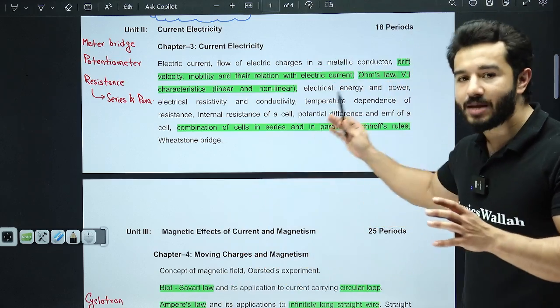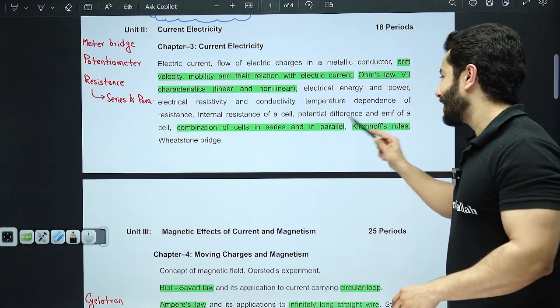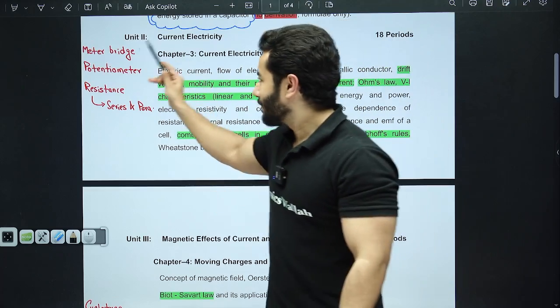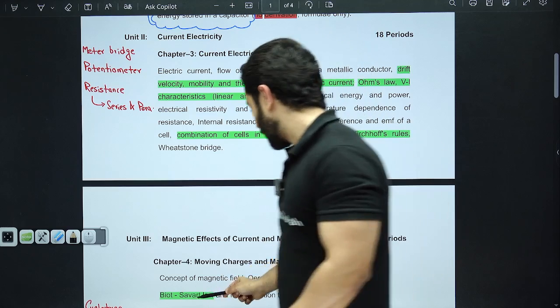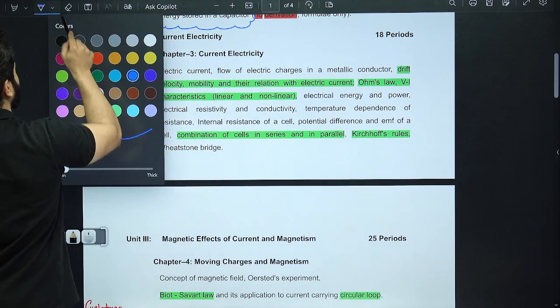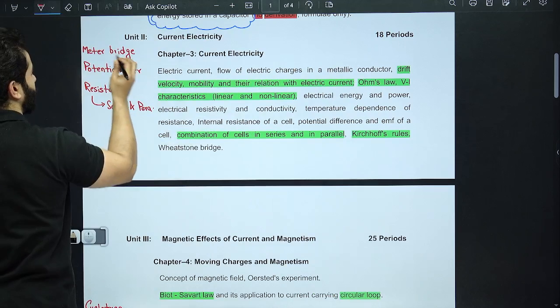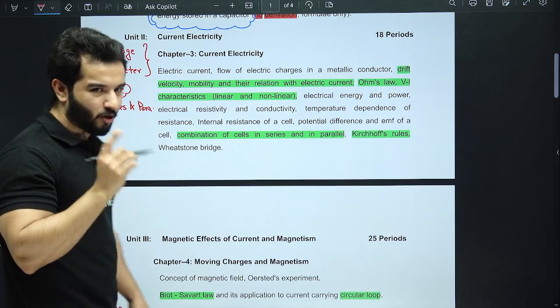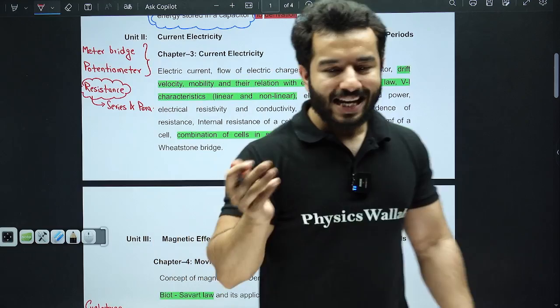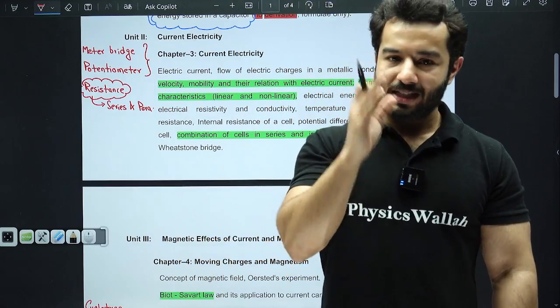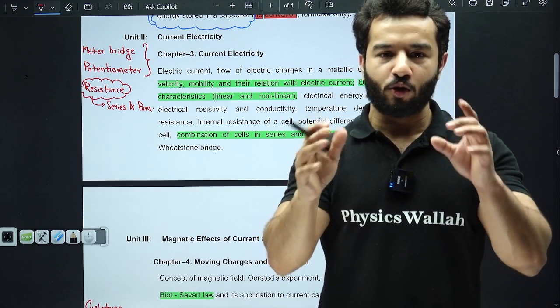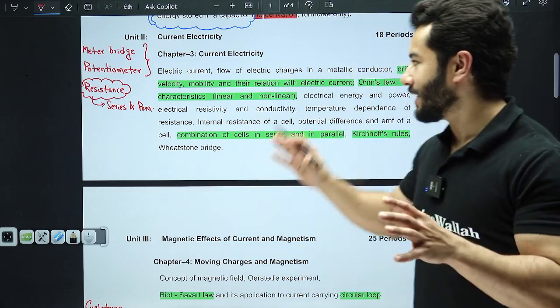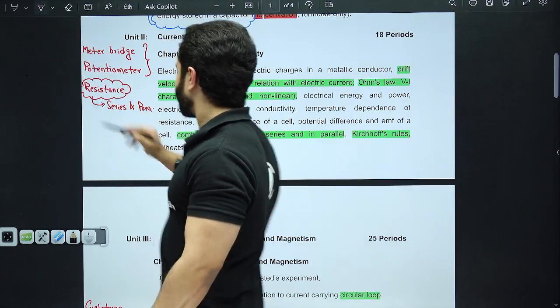I am just marking the very most important topics. Combination of cells in series and parallel is important. Kirchhoff's law is very important. What is deleted? Meter bridge is deleted, potentiometer is deleted. Please don't waste your time on these two topics. Resistance in series and parallel combination is also deleted, but anyway you know it. Where you can save your time is you don't have to go for those tricky circuits. That part has been deleted.